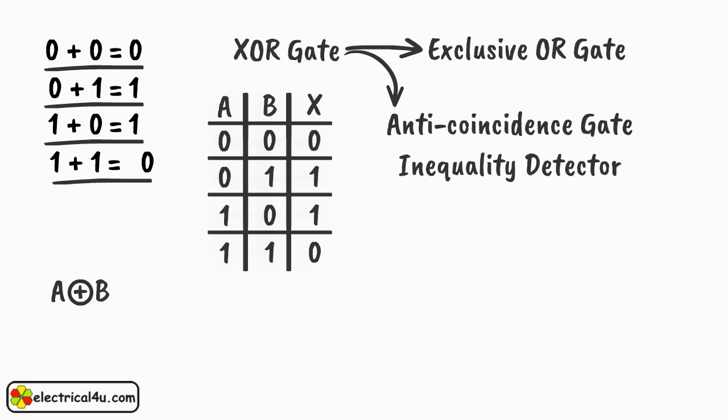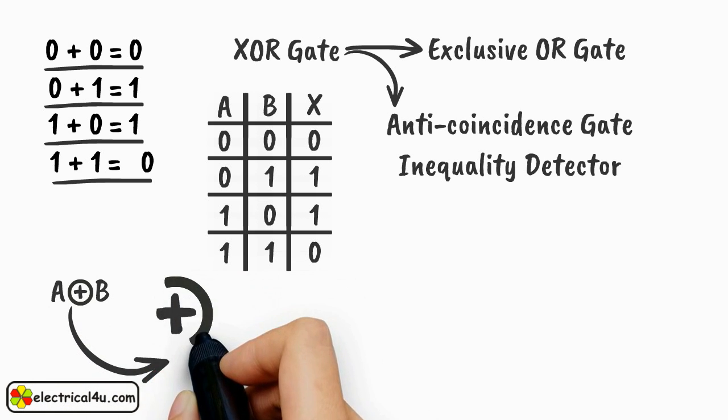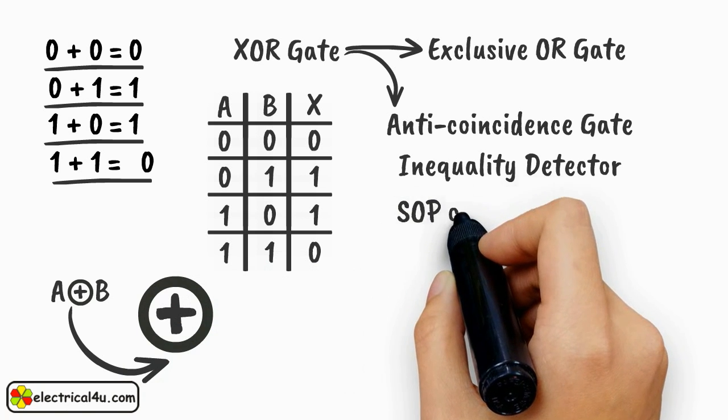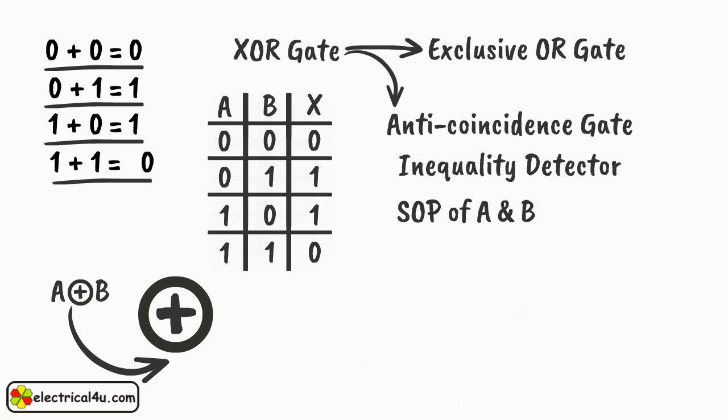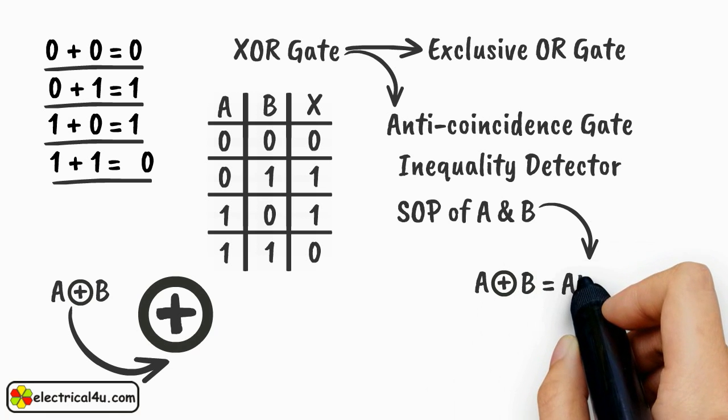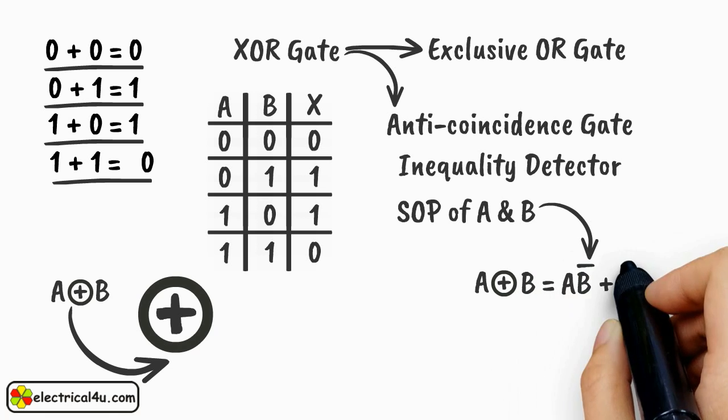The symbol of exclusive OR operation is represented by a plus sign surrounded by a circle. From this truth table, it can easily be seen that the sum of products or SOP form is A circled plus B equals AB bar plus A bar B.